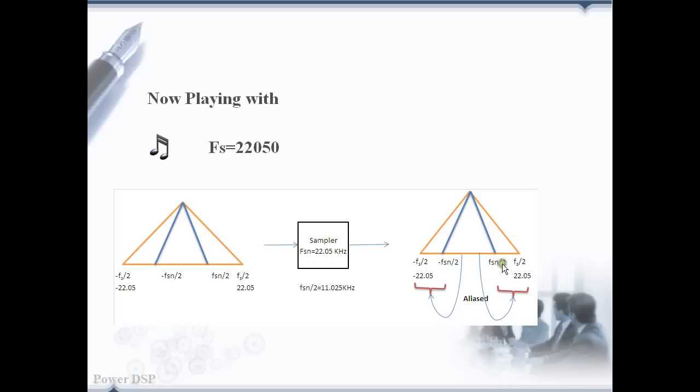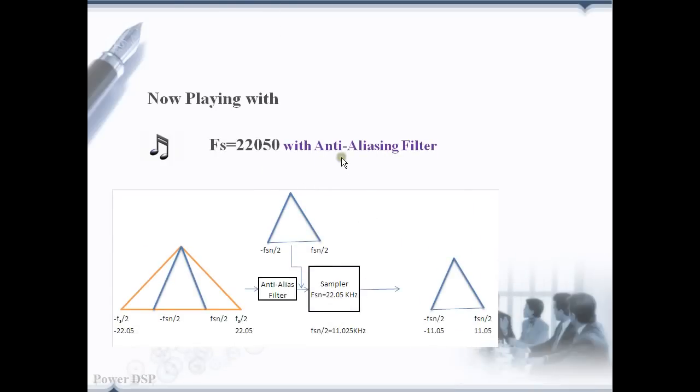Otherwise, the frequency components from 11.025 to 22.05 kHz will fall back on the spectrum, what we would call an aliasing problem. Here, we are not using the anti-aliasing filter, so aliasing has had its effect on the signal. But, we are not seeing much difference between aliasing signal and original signal because most of the musical components are below 10 kHz. Okay, let's see the signal being played with anti-aliasing filter with the same sampling frequency. Now, the frequency components from Fs by 2 to Fs by 2 is removed by using a low-pass anti-aliasing filter. So, there is no aliasing effect.